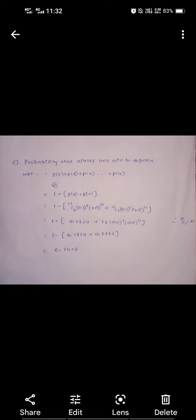Part C: at least 2 will be defective. We can solve this in two ways: first, probability of 2 plus probability of 3 plus probability of 4, and so on up to probability of 12; or, 1 minus the quantity probability of 0 plus probability of 1.